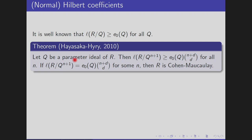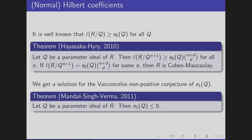Now we talk more than this. We always have that the co-length of Q is always bigger than or equal to the multiplicity of Q when Q is a parameter ideal. The theorem of Hayasaka and Hiry states that the co-length of Q^{n+1} is always bigger than a certain bound, and if we have equality for some n, then the ring is Cohen-Macaulay. Applying this inequality, the first coefficient Ē₁ is non-positive. This is the theorem of Mada, Singh, and Verma: if Q is a parameter ideal of R, then E₁(Q) ≤ 0.